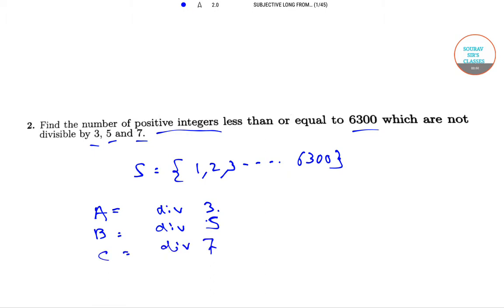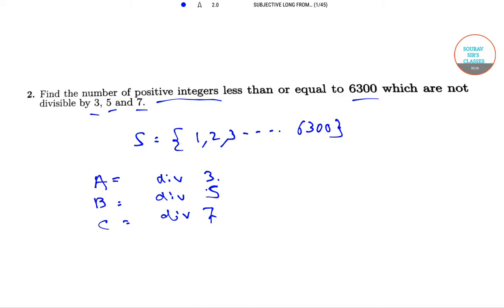Now, since we have to find the positive integers which are not divisible by 3, 5, and 7, what we actually have to find is N of S minus N of A union B union C.